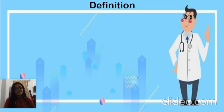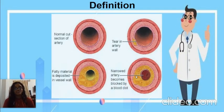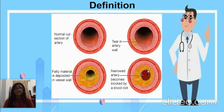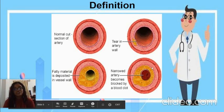Now we'll see the definition in more depth. Atherosclerosis is defined as the thickening and hardening of muscular arteries, mainly involving the tunica intima as seen here, and it is characterized by the presence of a fibro-fatty plaque, which is seen in this diagram.